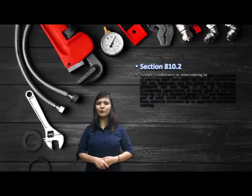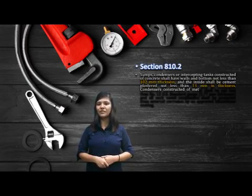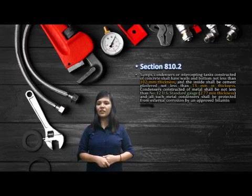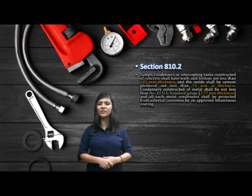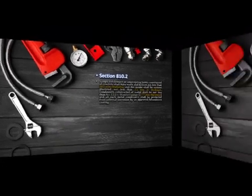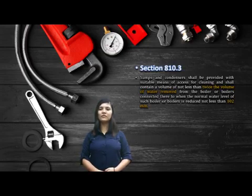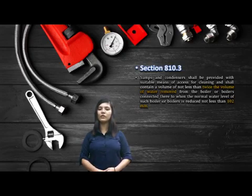Section 810.2: Tanks, condensers, or intercepting tanks constructed of concrete shall have walls and bottom not less than 110 mm in thickness, and the inside shall be cement plastered not less than 13 mm in thickness. Condensers constructed of metal shall be not less than number 12 U.S. standard gauge, 2.77 mm thickness, and all such metal condensers shall be protected from external corrosion by an approved bituminous coating. Tanks and condensers shall be provided with suitable means of access for cleaning and shall contain a volume of not less than twice the volume of water removed from the connected boiler when the normal water level is reduced not less than 102 mm.